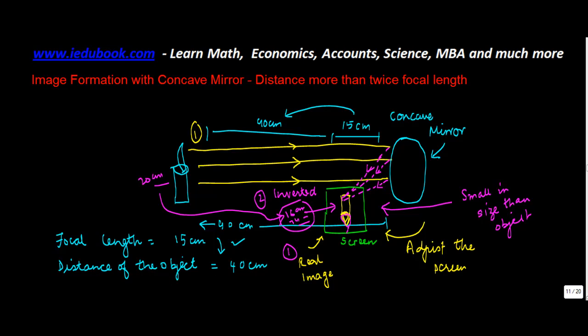So this is a real image, it is inverted, it is smaller in size than the actual object. More or less this is also similar to what it was in case of the previous distance that we saw earlier. But the only difference is that in this case the image is going to be a little more in higher size than the previous one.